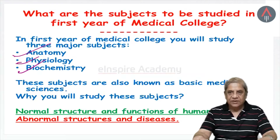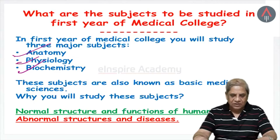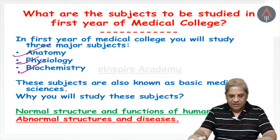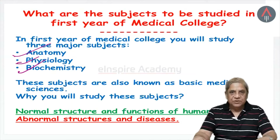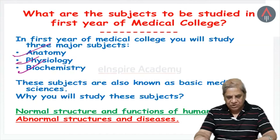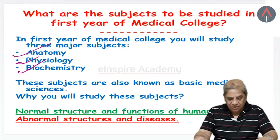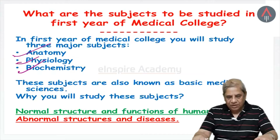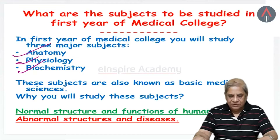The third subject is biochemistry, which will tell you what are the various chemical processes taking place within the cell and within an organ. For example, when glucose burns in the presence of oxygen in individual cells of the body, it produces energy and carbon dioxide. In a similar way, there are many reactions taking place in the body with the help of hormones or enzymes — all these will be learned in biochemistry.